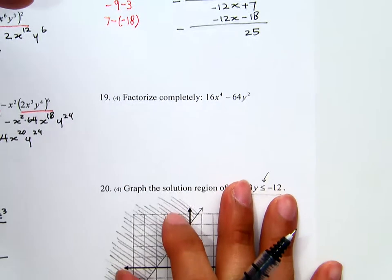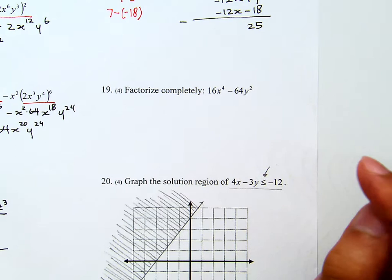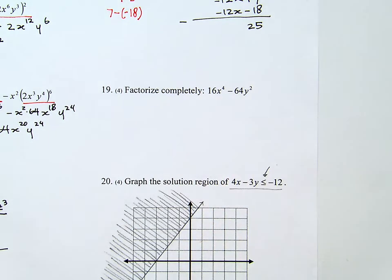Now number 19. Factorize completely. You see that you have two terms here and you have subtraction. So fairly likely, this is difference of squares. But however, keep in mind that we always start from common factor.